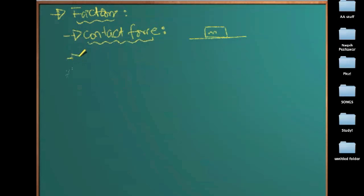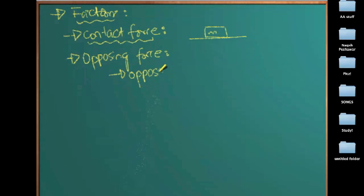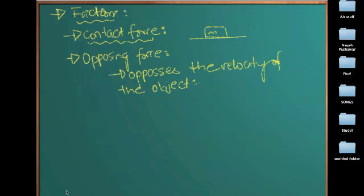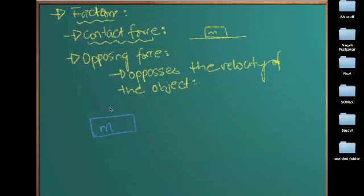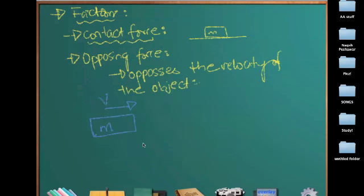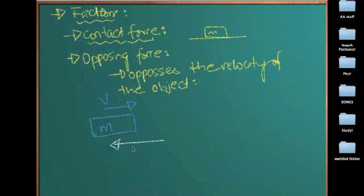Now, friction force is an opposing force. Friction force always opposes the velocity of the object. Let's say we have an object of mass m moving in this direction with a velocity of v. The friction force would always be acting in the direction opposite to the velocity. This is the symbol of friction force — it would always be acting against the direction of velocity.